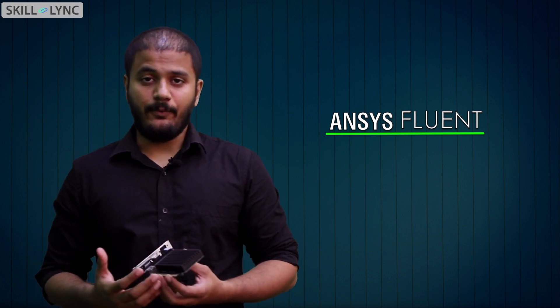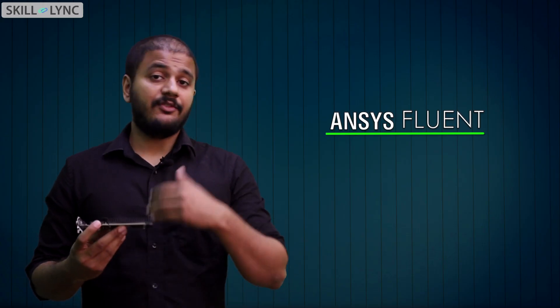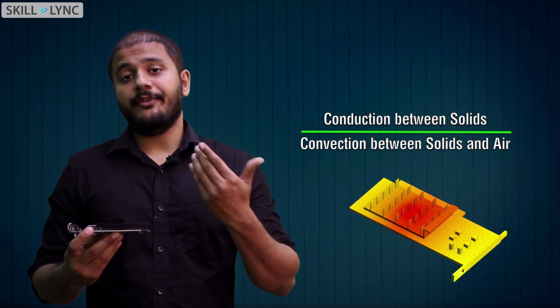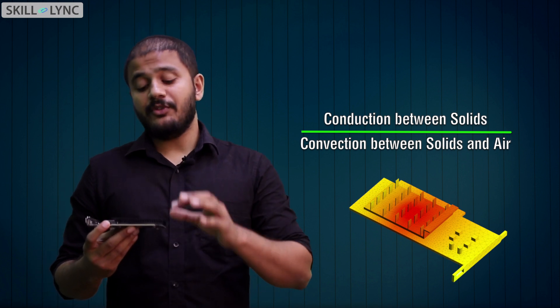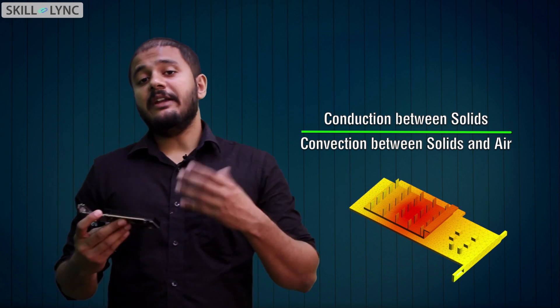A conjugate heat transfer simulation is one where multiple modes of heat transfer are involved. In this particular case, there is solid conduction, and on top of that there is also convection, which basically removes the heat from the solid fins to the external air. Since we are interested in the final temperature distribution, we will be performing a steady state analysis.